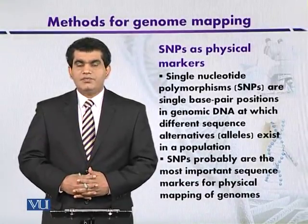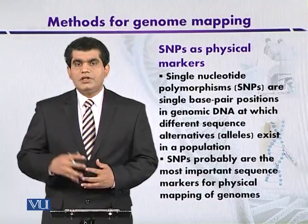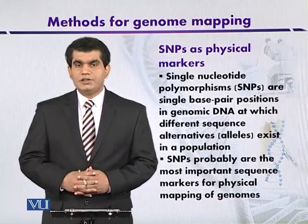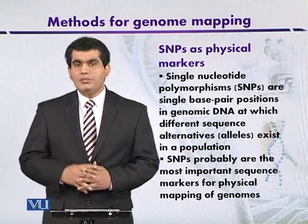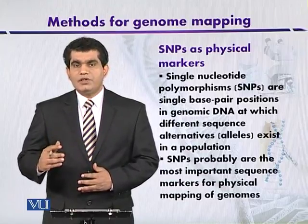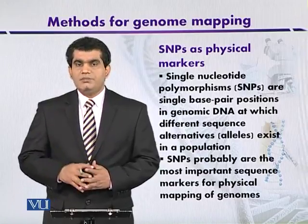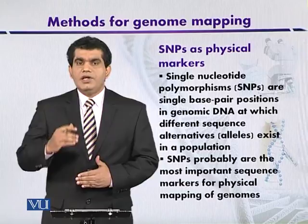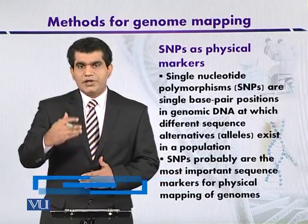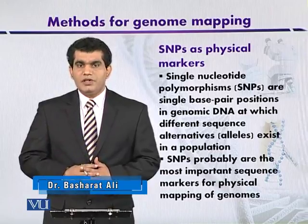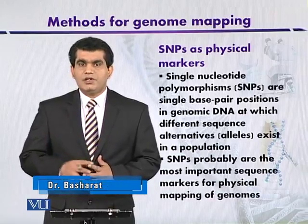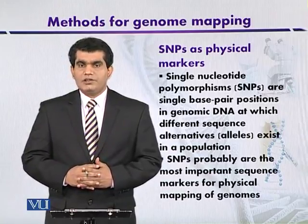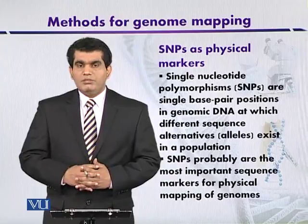SNPs as physical markers. Single nucleotide polymorphisms, or SNPs, commonly pronounced as 'snips,' are single base pair positions in a genomic DNA at which different sequence alternatives, called alleles, may exist in a population. Any DNA segment present in one individual may differ from another individual at that single base pair, and these single base pair variations within a particular DNA segment — whether a gene or any other region — are commonly called SNPs or single nucleotide polymorphisms.